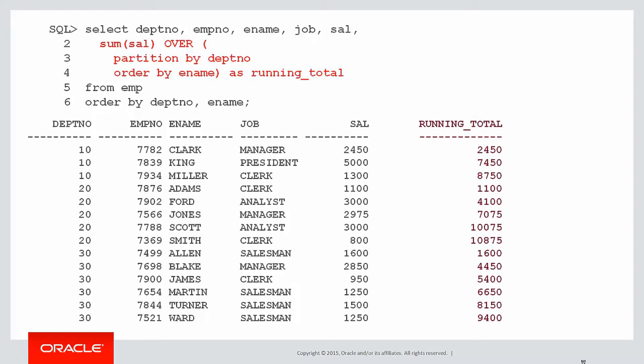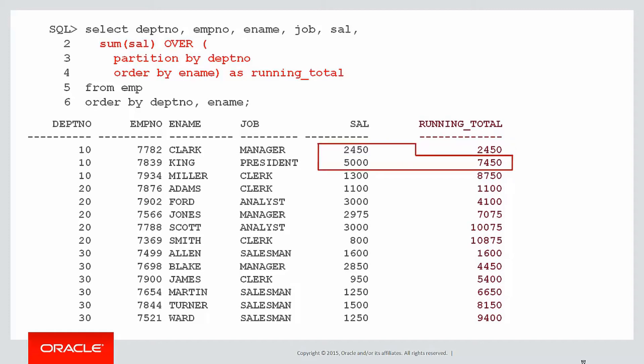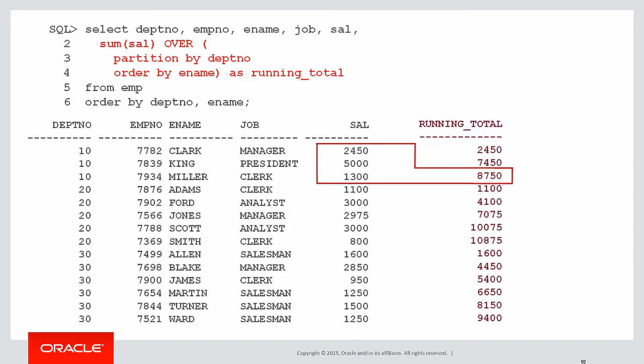There's our syntax as the running total and out comes the column. How is that figure being arrived at? We start with the first row — the salary is 2,450, and the running total is 2,450. Moving on to the second row, 7,450 is the sum of the two salaries. The third row, 8,750 is the sum of all the salaries in department 10. When we move on to the next row, we start again because we're partitioning by department number. We've now moved on to department 20, and so on.